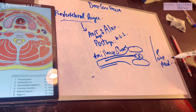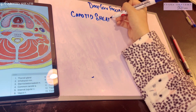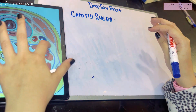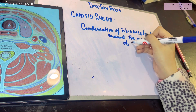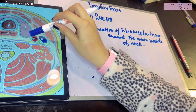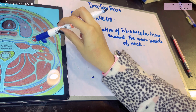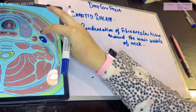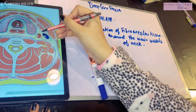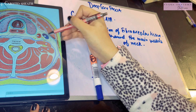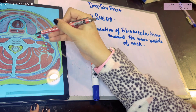Now let's talk about the carotid sheath, also one of the parts of the deep cervical fascia. By definition, it is a condensation of fibroarolar tissue around the main vessels of the neck. The most medial is the internal carotid artery, laterally is the internal jugular vein, and between them is the vagus nerve. The carotid sheath is formed with an anterior and a posterior wall. All the layers of the deep cervical fascia give contributions: anteriorly the investing layer and the pre-tracheal layer, and posteriorly the pre-vertebral layer.